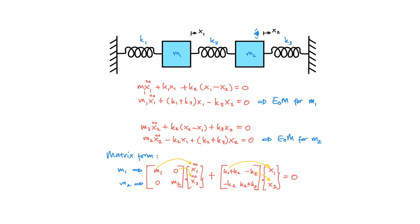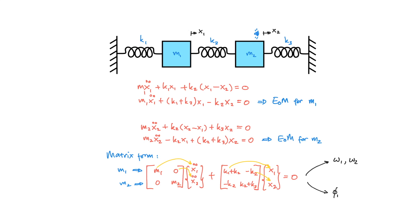So in summary, we have derived two equations of motion for a 2-degree-of-freedom system and written the two coupled equations in matrix form. In the next video, I will show you how to calculate the natural frequencies or eigenfrequencies and the mode shapes or eigenvectors from the equations of motion matrix.